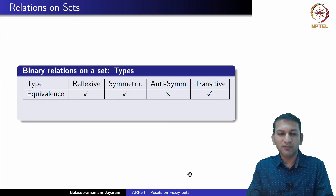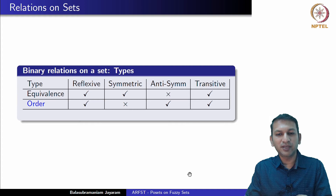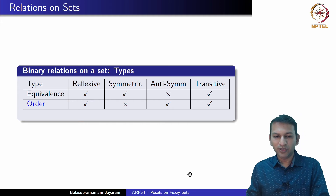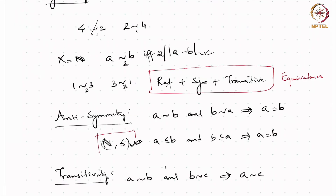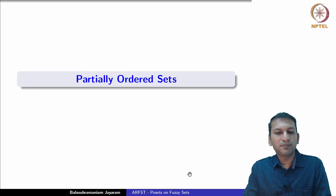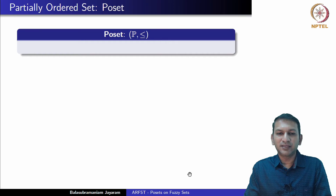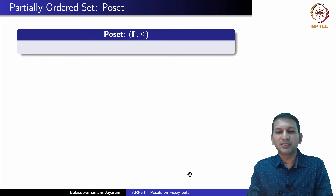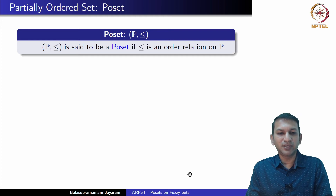We can also have relations which are reflexive, anti-symmetric, and transitive. Such relations we call order relations. For instance, consider the usual ordering on the set of natural numbers. We know that it is reflexive, anti-symmetric, and also transitive. Thus, it forms what we call an order relation. Let us look at what are partially ordered sets. Consider a non-empty set P with a binary relation defined on it.